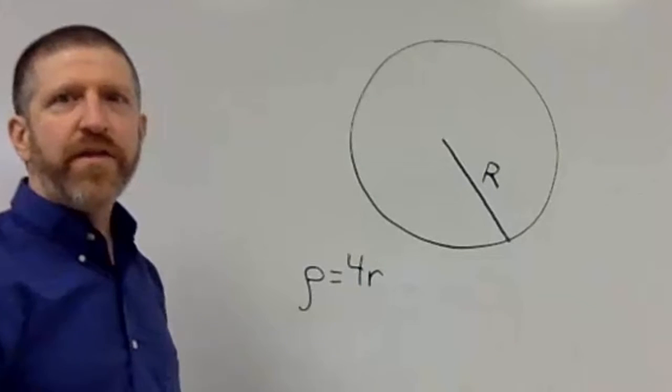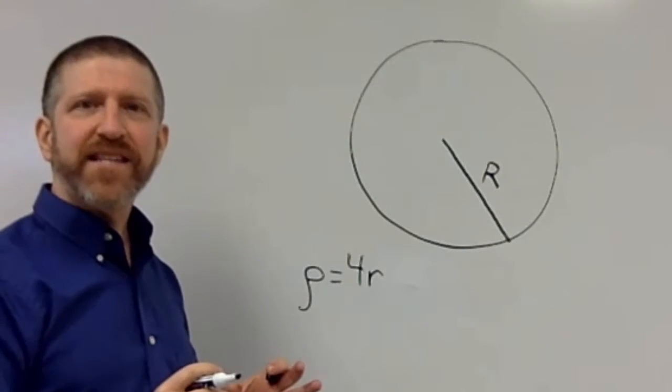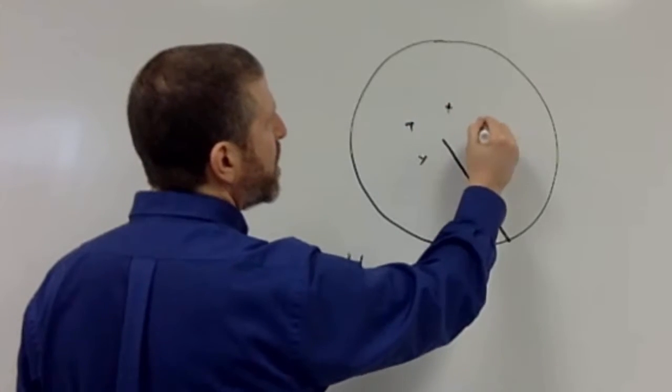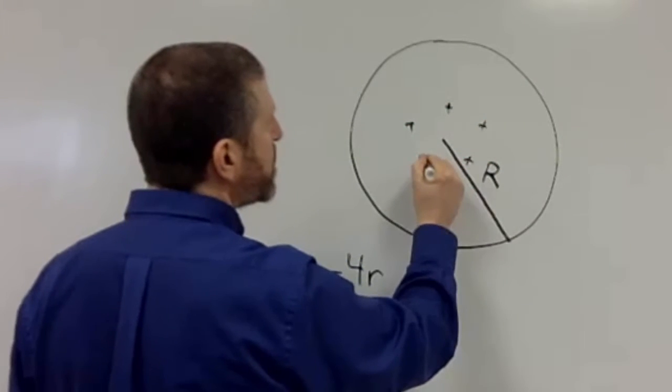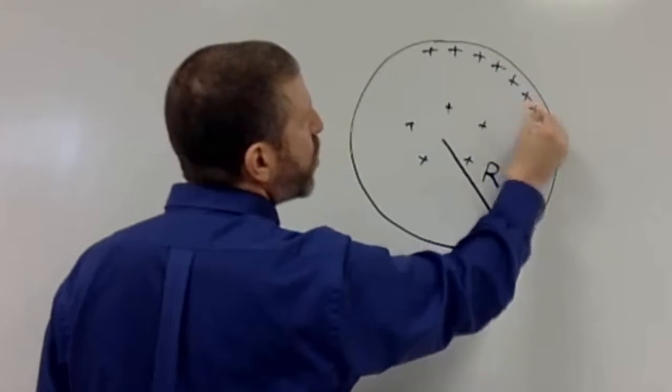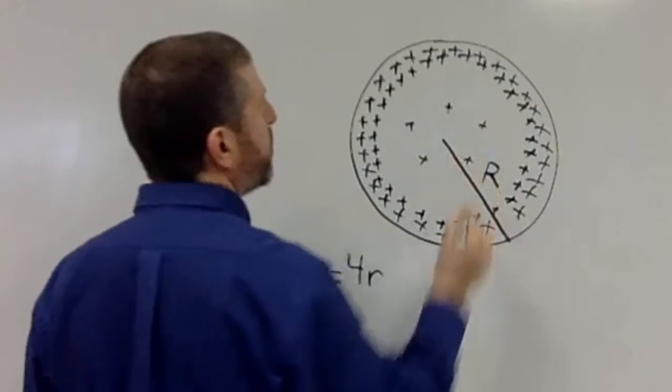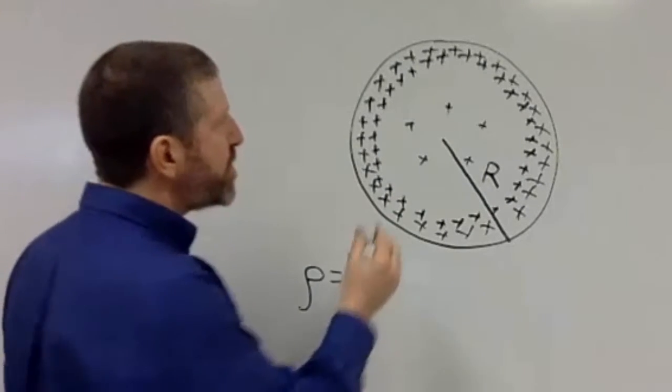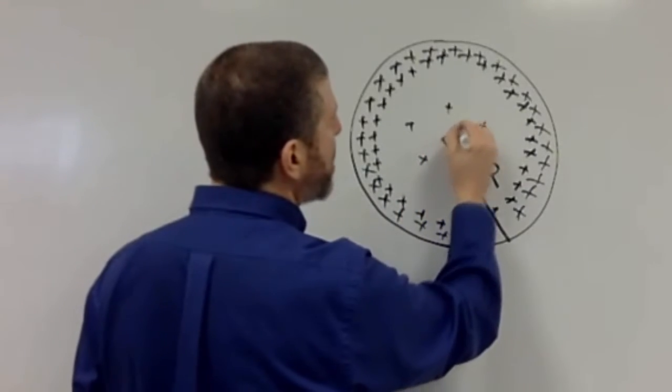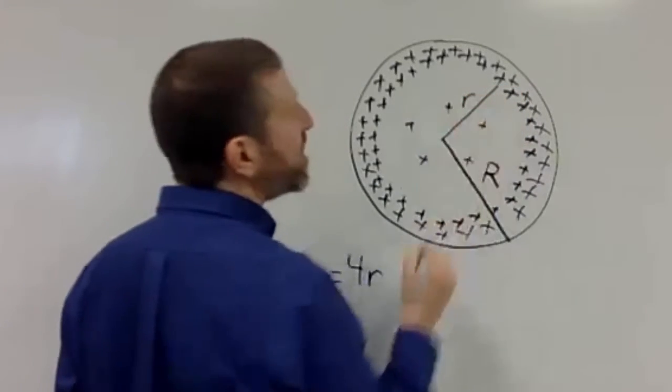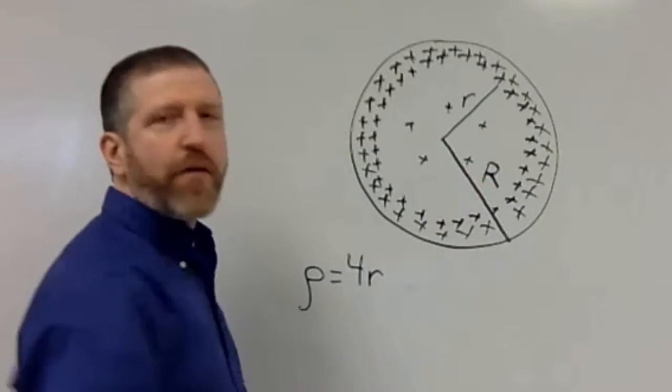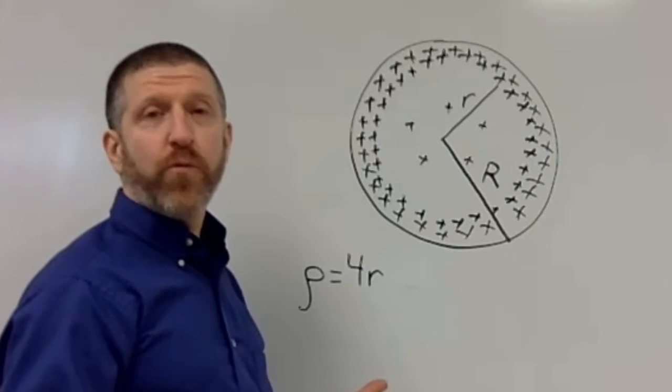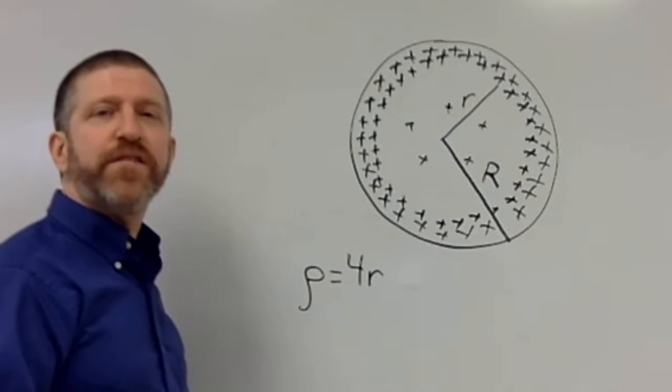In other words the charge gets more dense as you get farther out. For example the charges right in here might be kind of way spread out but when you get farther out to a bigger r they're way more dense. So they're just more dense as you go farther outward to some arbitrary radius r. Okay we're gonna use little r for our arbitrary radius and big R for the radius of the sphere.